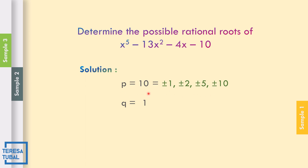How do we know those are the factors? Those are the numbers that can exactly divide 10. For example, can 3 be a factor? No — 10 divided by 3 is not exact. So the possible numbers that divide 10 are 1, 2, 5, and 10. For q, the factors of 1 are simply positive-negative 1.